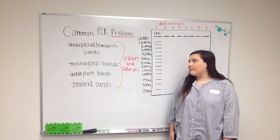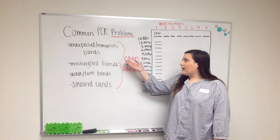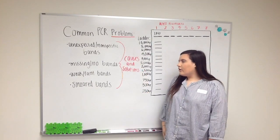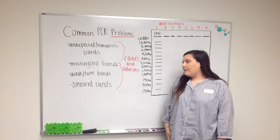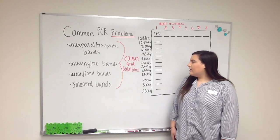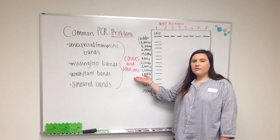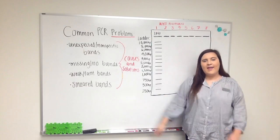The issues we're going to be discussing today are unexpected or non-specific bands, missing or no bands, weak or faint bands, and smeared bands. We're going to be discussing the causes and the solutions of these problems. Let's go ahead and get started.